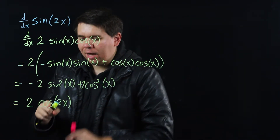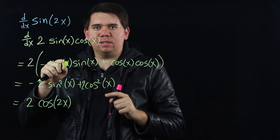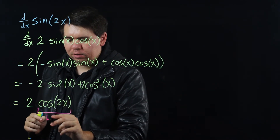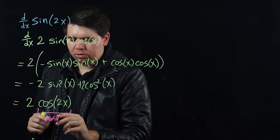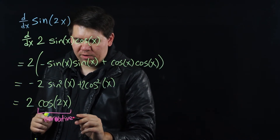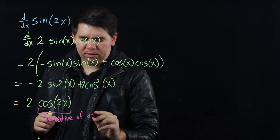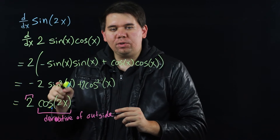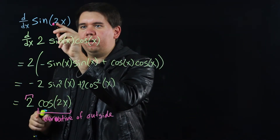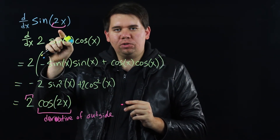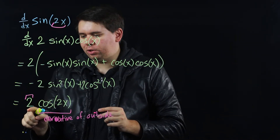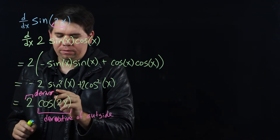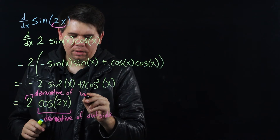Once again, what we got wasn't simply the derivative of the outside. If you just take the derivative of the sine, you would think it's just cosine of 2x — that's the derivative of the outside. But there's also this 2 here. Why is there an extra 2? Because there's an inside function. The inside function is 2x, and the derivative of 2x is just 2. That's where the 2 came from — that was the derivative of the inside.